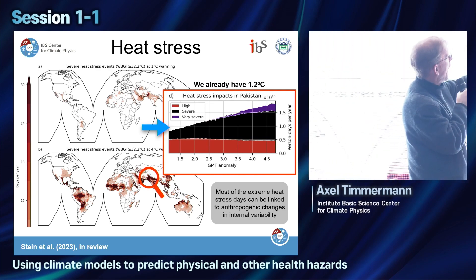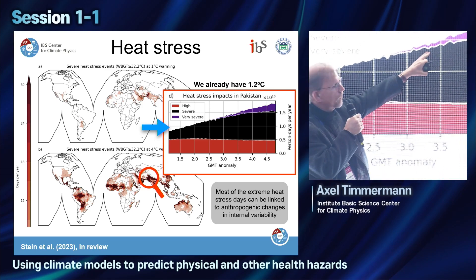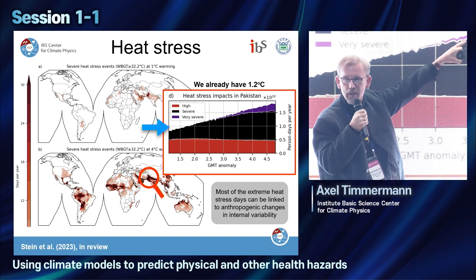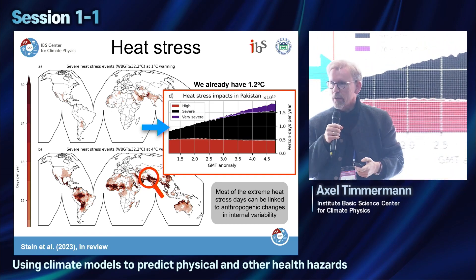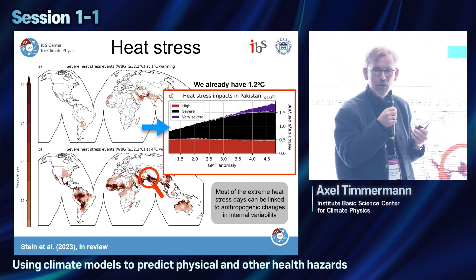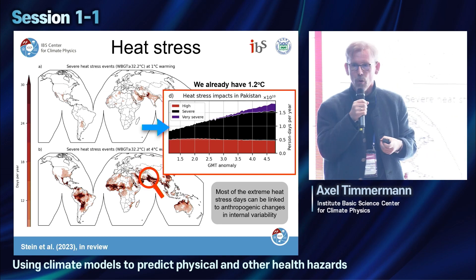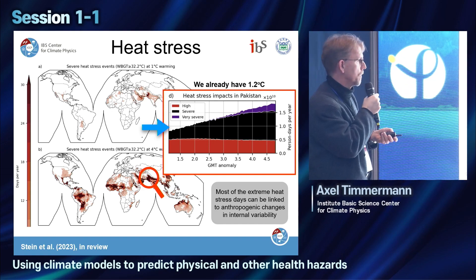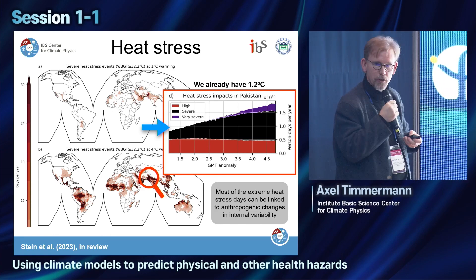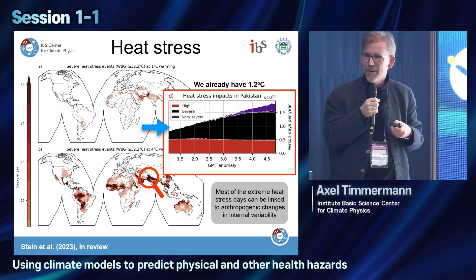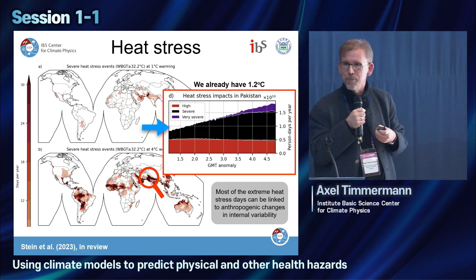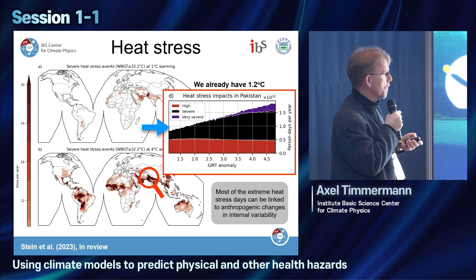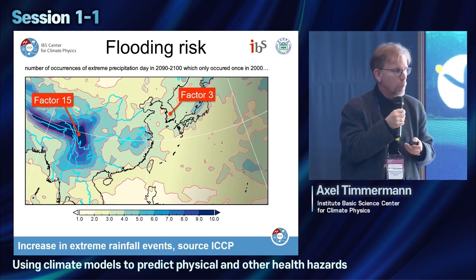We had to introduce a new category — 'extreme danger' — because existing labor safety categories were already exceeded. This illustrates it is almost impossible to work outside under those conditions. This affects agriculture, construction, and so on. These are projections that are relevant not just for infectious diseases, but for physical health and physical hazards — something we can also contribute to with these climate models.